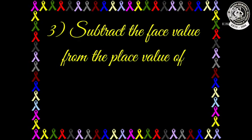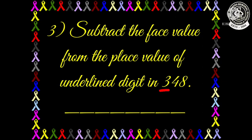Now let us see question number 3: Subtract the face value from the place value of the underlined digit in 348. So children, here the digit is 3. What is the face value and the place value? Both you have to find out first, and then you have to subtract the face value from the place value. Okay, children?